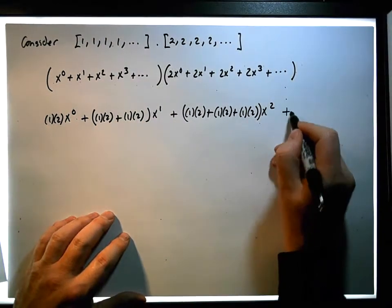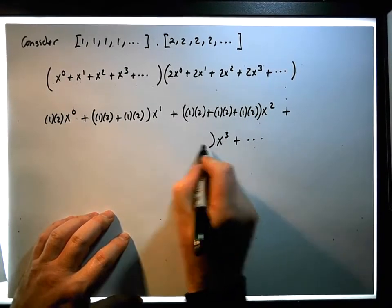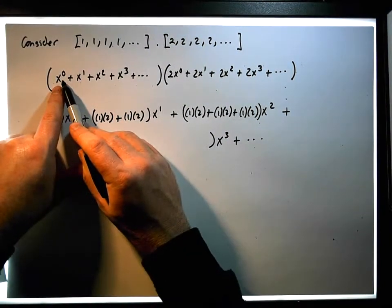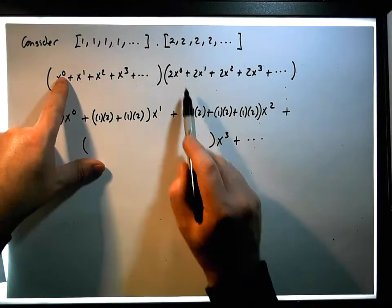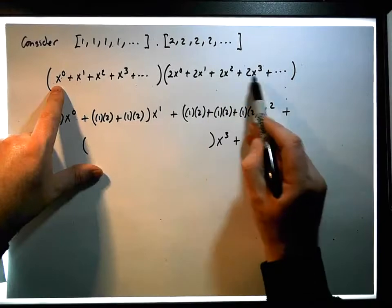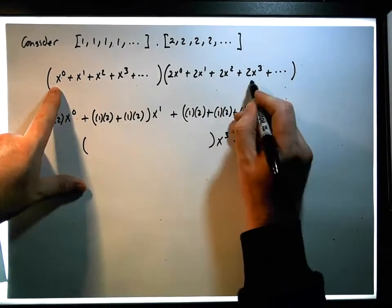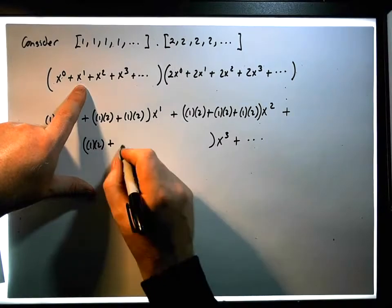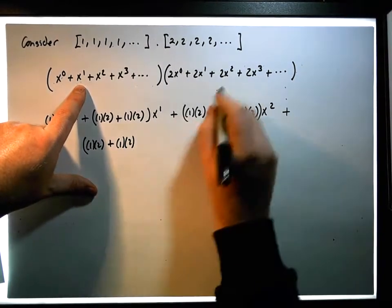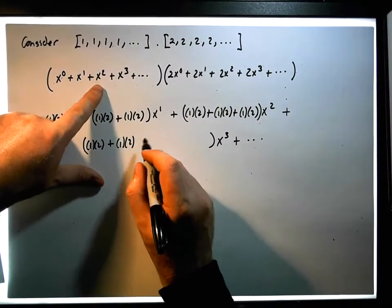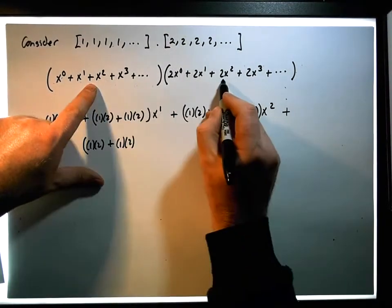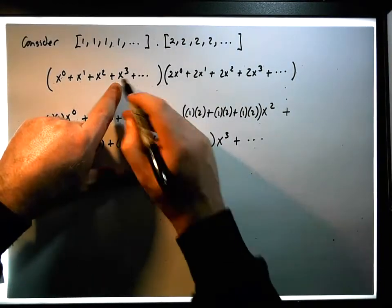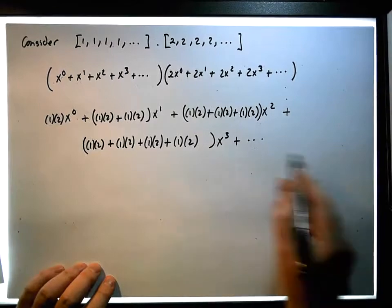For the x³ term, the sequence continues and we have four terms. Power terms whose exponents must come to 3: x⁰ times x³ gives x³ — coefficient 1 times 2. Plus x¹ times x² gives x³ — also 1 times 2. Plus x² times x¹ gives x³ — again 1 times 2. Plus x³ times x⁰ gives x³ — coefficient 1 times 2.